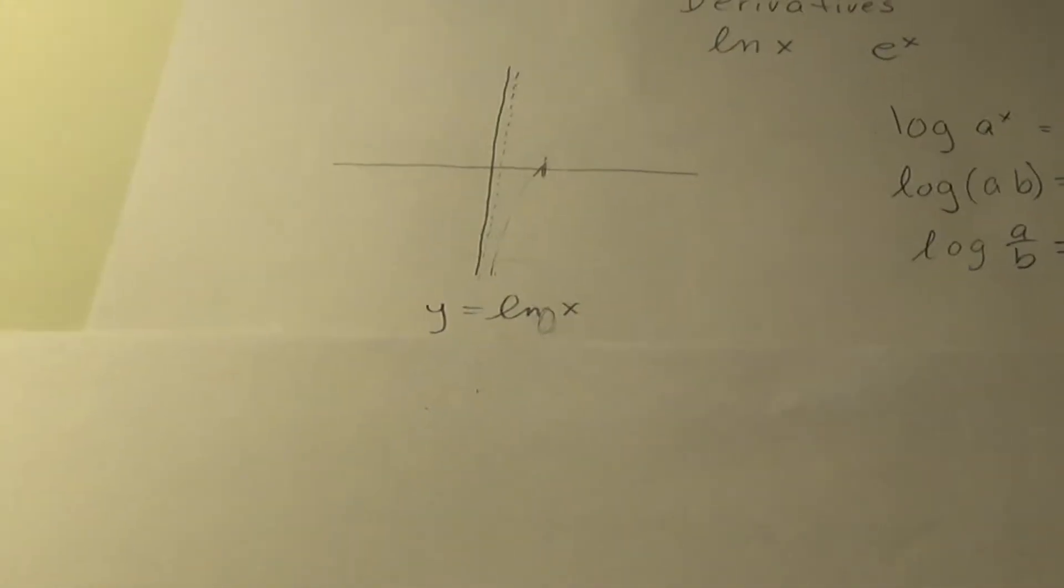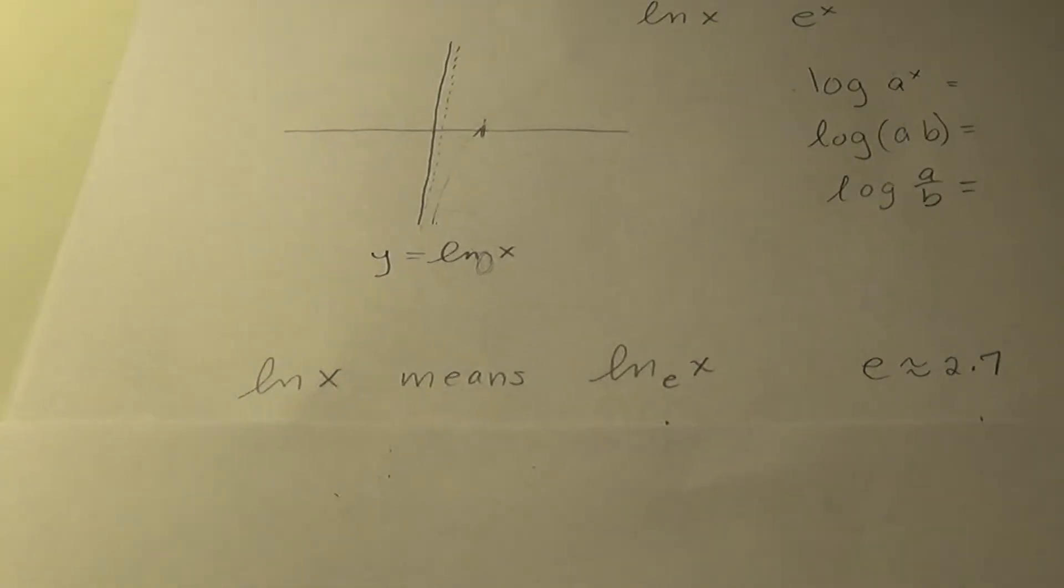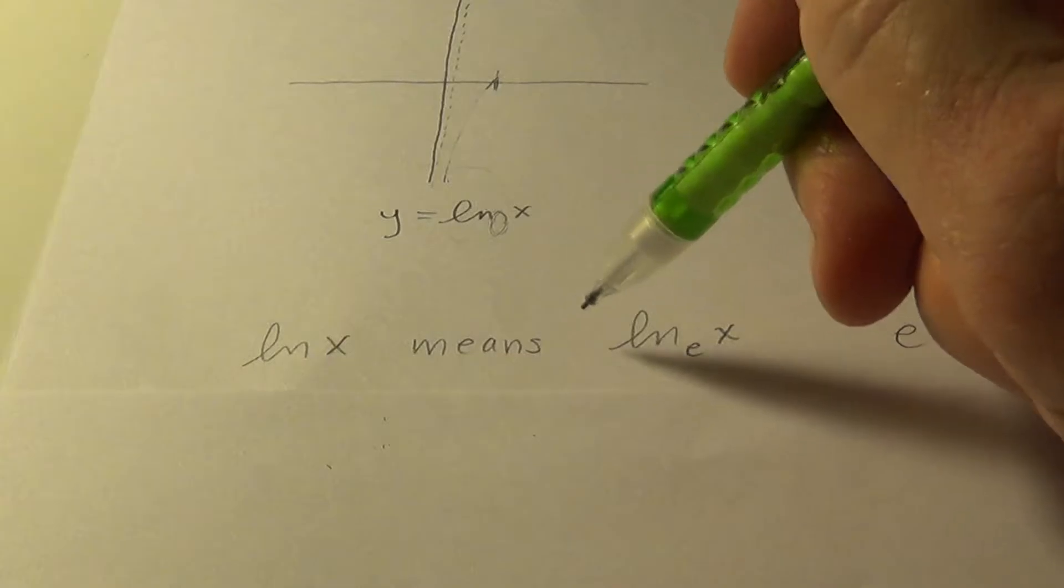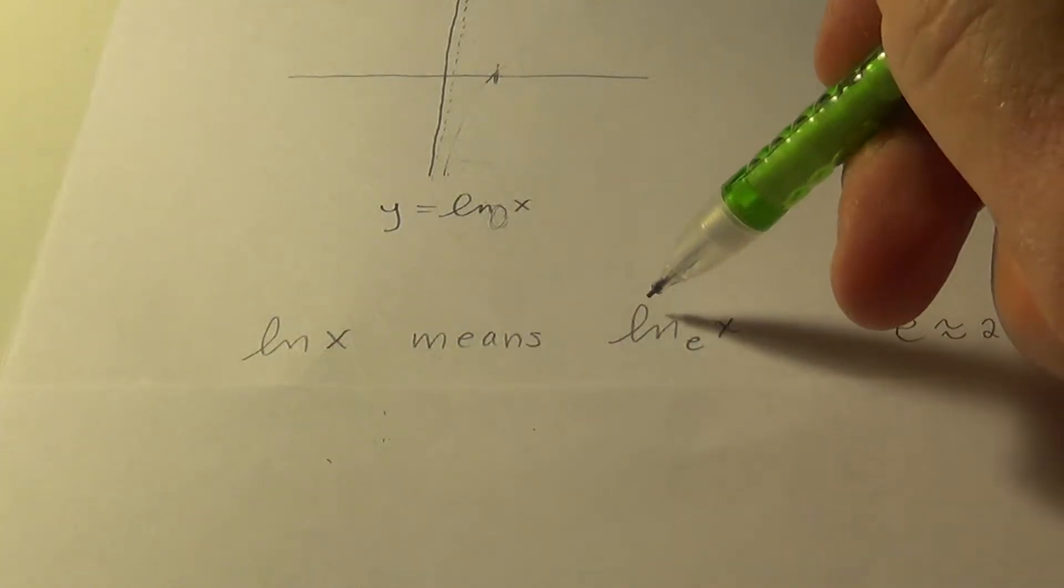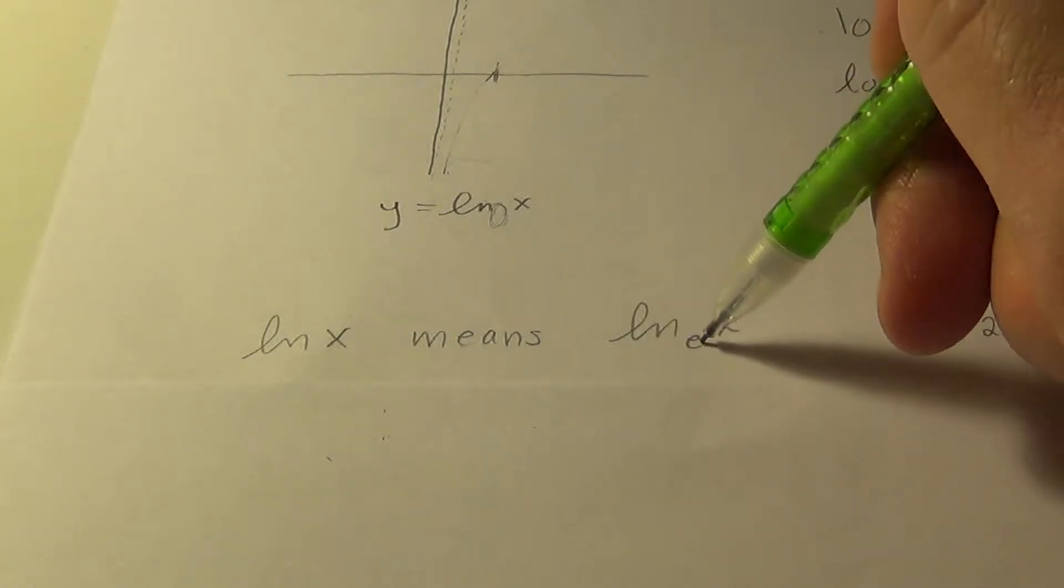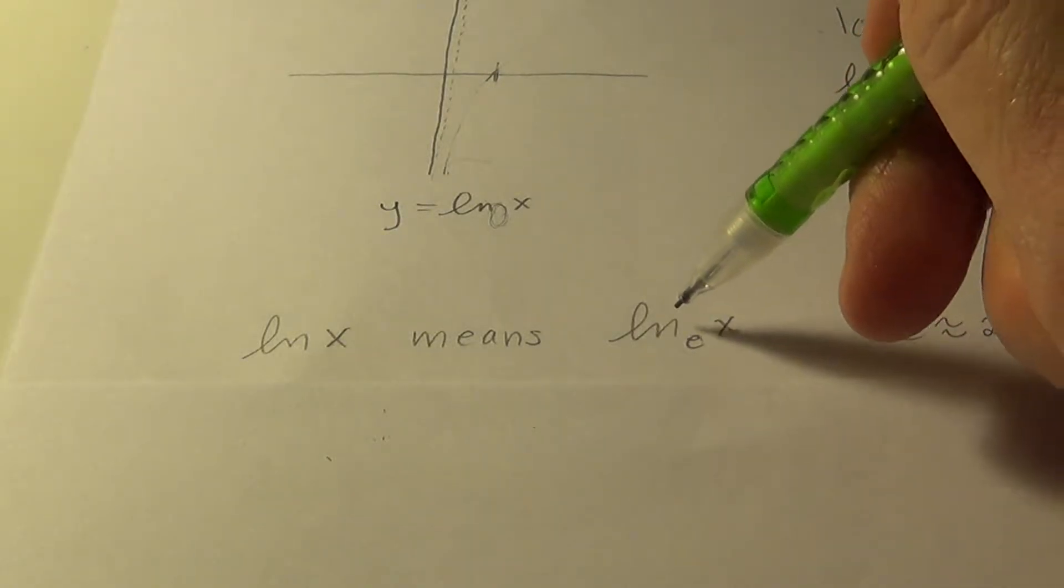It's unwritten here. Usually it's a little subscript here, but ln tells everyone what the base is. Do you remember? It means ln of x means log to the base e. So that is the natural log.